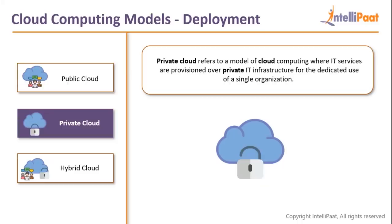Private cloud can be two things. First: you ask your cloud provider for a separate, isolated server stack where no other company's data exists — only yours. That is one kind of private cloud. Second: you buy your own servers and create your own cloud in your data center — you buy all the required servers and host your application as if you're on a cloud provider, except it's your own cloud.